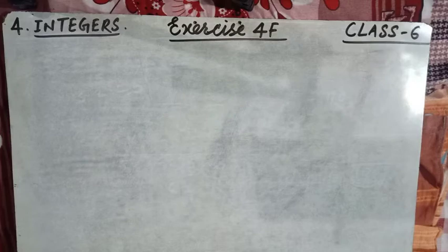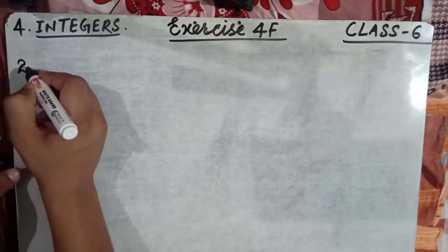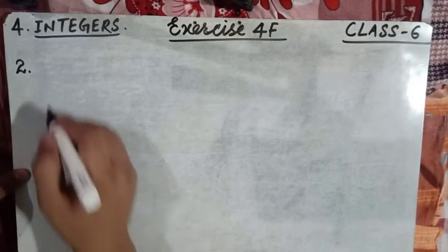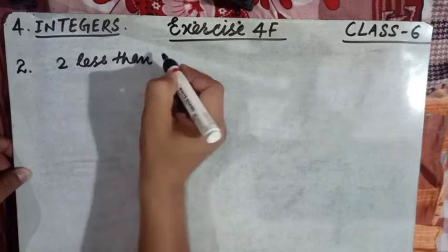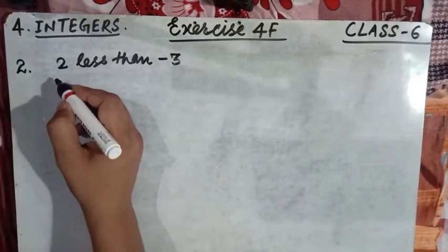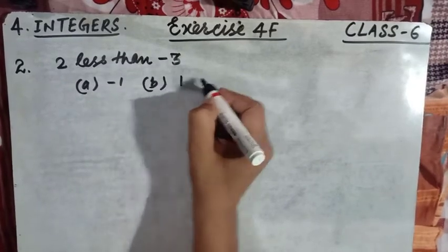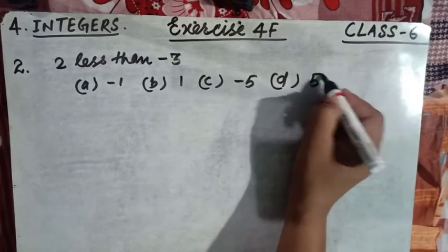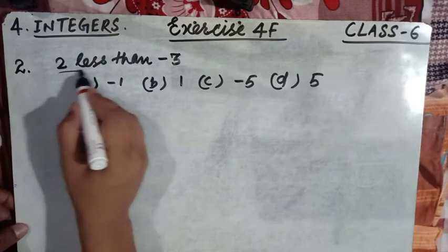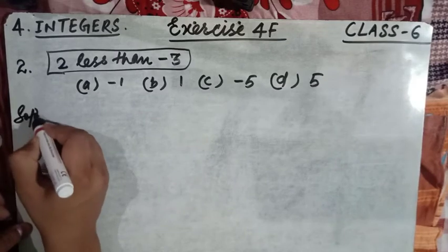The first question says: mark a tick against the correct answer in each of the following. Now, question number 2 says: two less than minus three. This question has four options — option A: minus one, option B: one, option C: minus five, option D: five. First, let's understand this statement, then we can solve it.